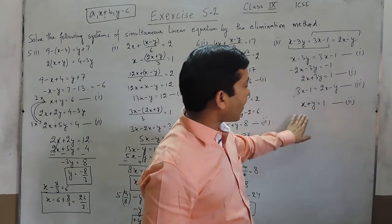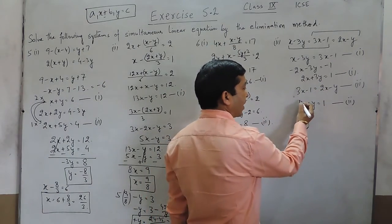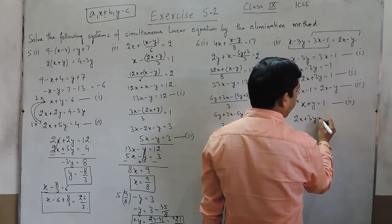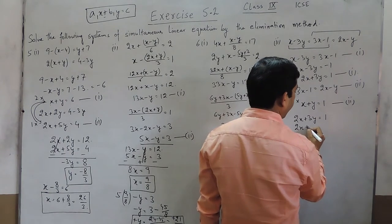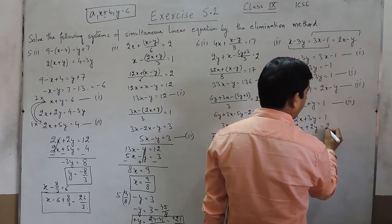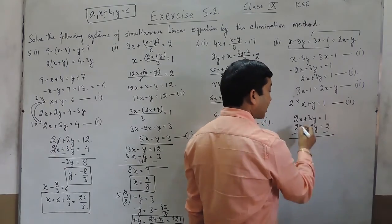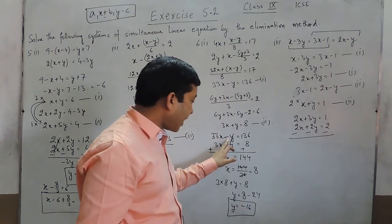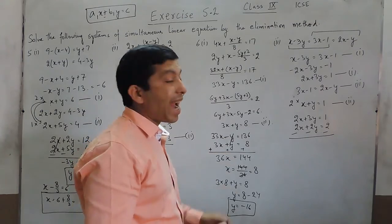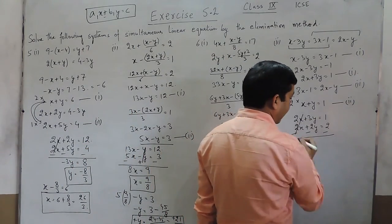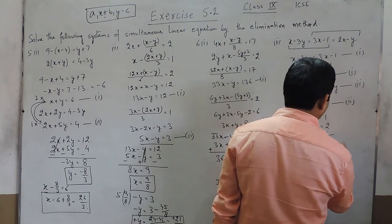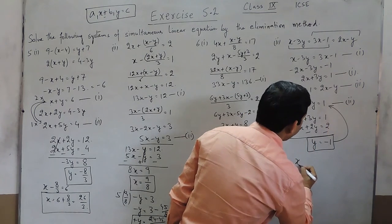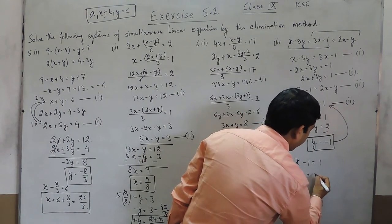Now the coefficient of x and coefficient of y are both different, so we multiply the second equation by 2. So the first equation is 2x plus 3y is equals to 1 and the second equation becomes 2x plus 2y is equals to 2. Subtracting the two — because the sign of both equations is positive, that is why we are subtracting — we get y is equals to minus 1. When I put y equals minus 1 in the equation: x minus 1 is equals to 1, so x is equals to 2.